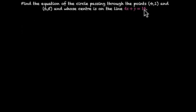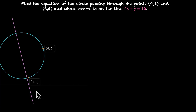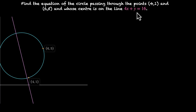Find the equation of the circle passing through the points 4 comma 1 and 6 comma 5 and whose center is on the line 4x plus y equals 16. Let's first plot this. We have these two points 4 comma 1 and 6 comma 5. Both of these lie on the circle and the center of the circle lies on this line. You can see that this line splits this circle into two. So the center lies on the line 4x plus y equals 16. How do we use this to find the equation of the circle?